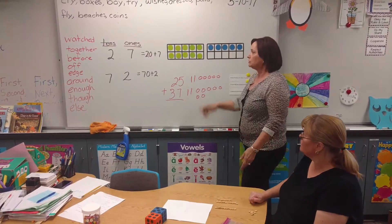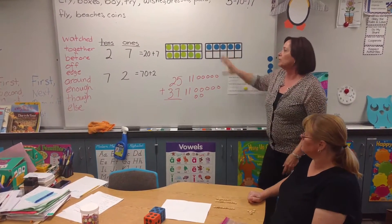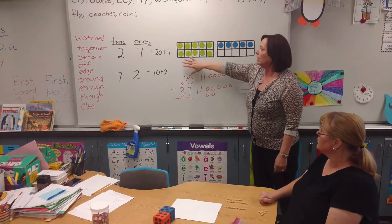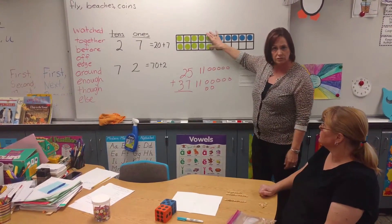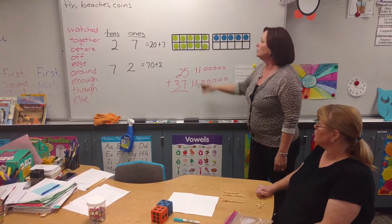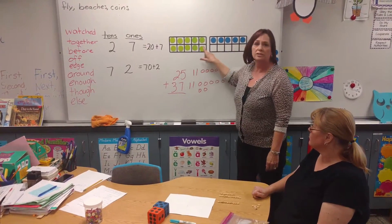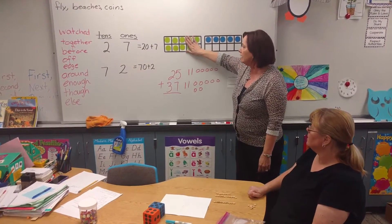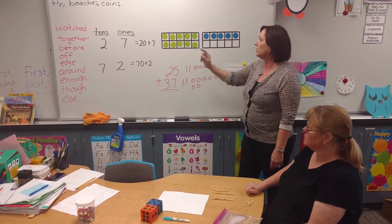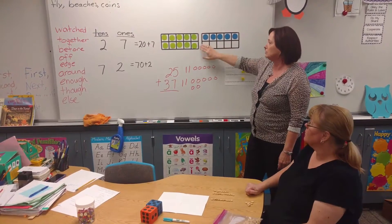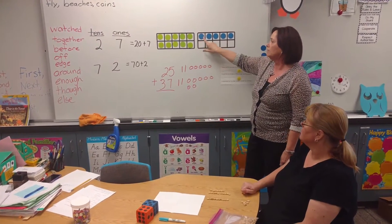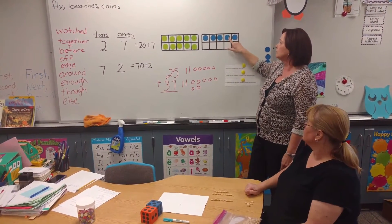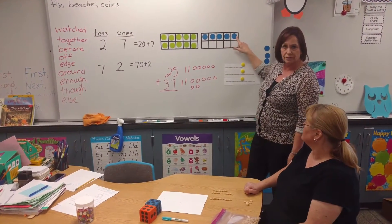In first grade, we start out with 10 frames. 10 frames have 10 squares, and when we put a dot in each one, that means we have a 10. So we count this as 10, and then as we're counting on, we go 10, 11, 12, 13, 14, and 15.